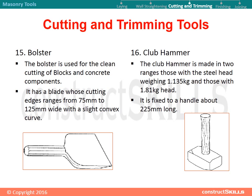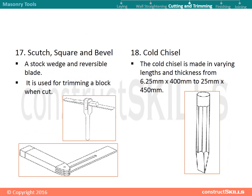Club hammer. The club hammer is made in two ranges: those with a steel head weighing 1.135 kg and those with a 1.81 kg head. It is fixed to a handle about 225 mm long. Cutting and trimming tools: scutch — a stock wedge and reversible blade used for trimming a block when cut.